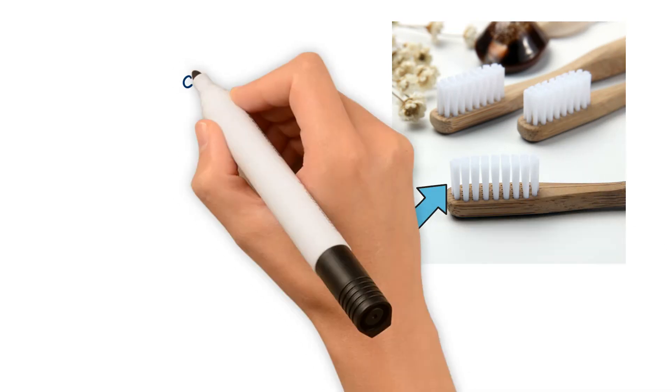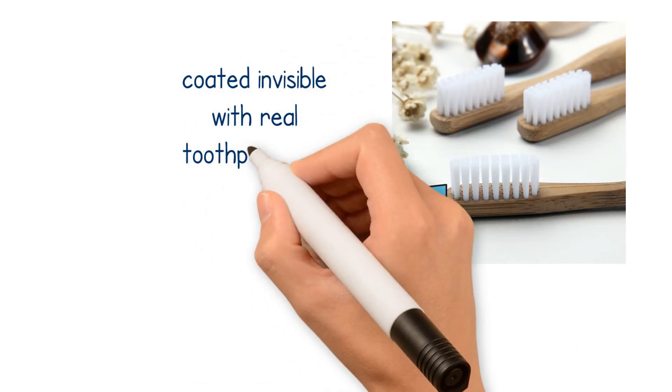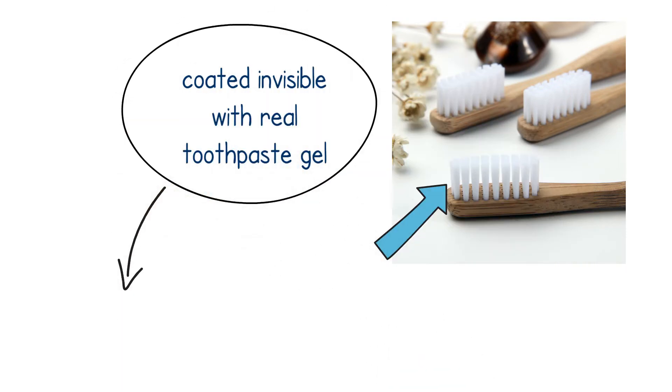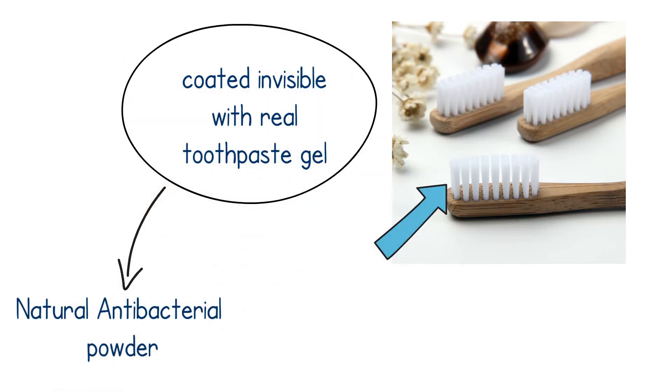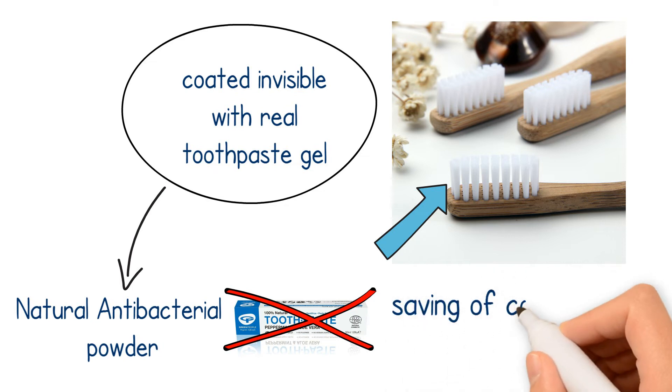The most unique feature is that every toothbrush bristle is coated and visible with real toothpaste gel, which includes a natural antibacterial powder for oral disinfection and surface germ protection. To avoid using plastic foils, caps and toothpaste tube brings enormous savings of cost, weight and plastic material.